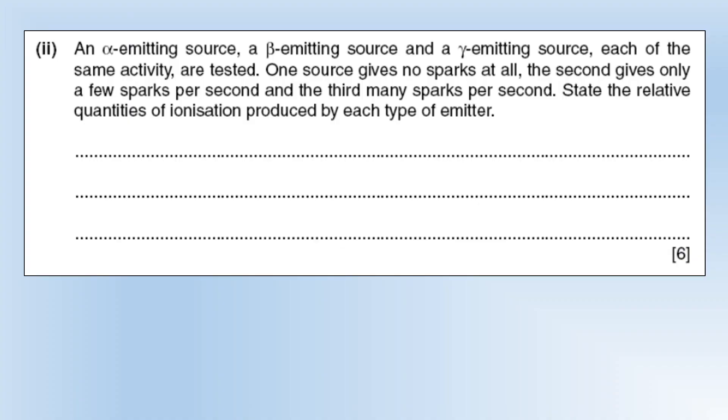An alpha emitting source, a beta emitting source and a gamma emitting source, each of the same activity, are tested. One source gives no sparks, the second gives only a few sparks, and the third many sparks per second. State the relative quantities of ionization produced by each type of emitter. The fact that the source is the same activity tells us they're giving off the same number of radioactive particles per second. So the alpha source gives off say 20 alpha particles per second, the beta is giving off 20 and the gamma is giving off 20.